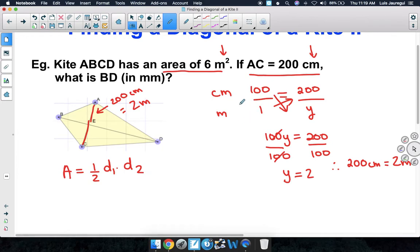Substituting in what we know, we can get the following equation. Instead of the area, we're going to replace that with the 6 square meters, and that should be equal to 1 half times the length of one of the diagonals, which in this case we found it to be 2 meters, times the other diagonal, which I'm going to call X for now.